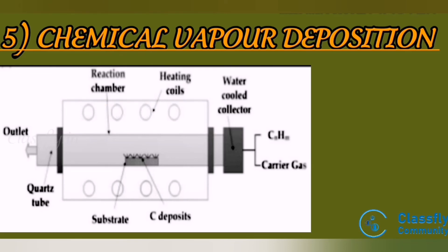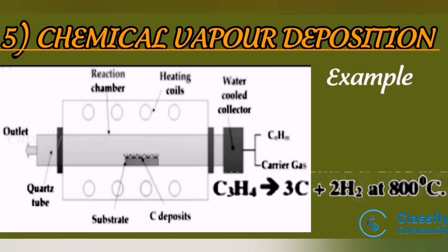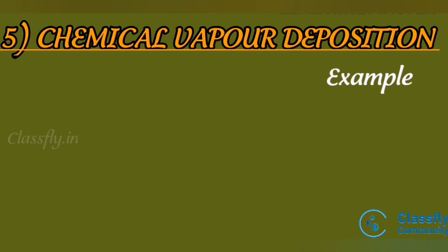The reaction is often catalyzed by a catalyst present on the substrate. For example, the CVD method is used for the growth of CNTs, i.e. carbon nanotubes: C₃H₄ → 3C + 2H₂ at 800°C.